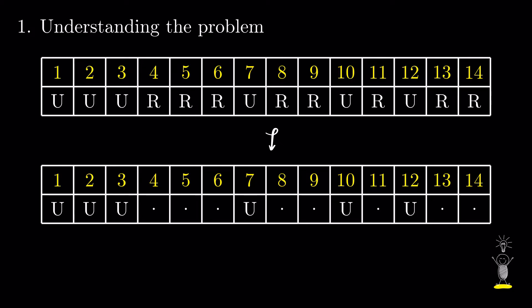So, our total number of paths is given by the number of ways we can choose 6 numbers, the count of upward moves, from 14, the total number of moves.